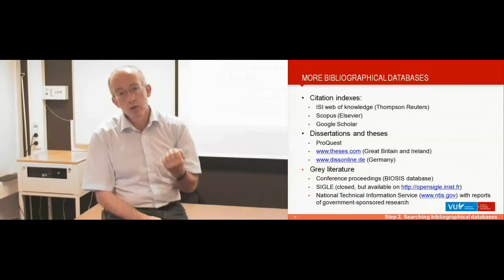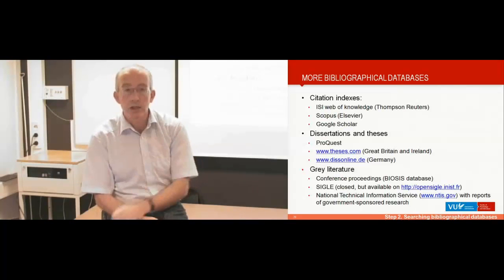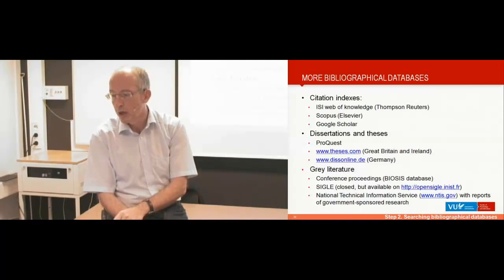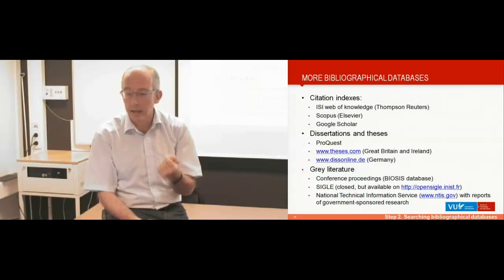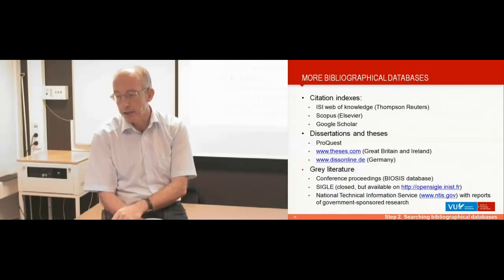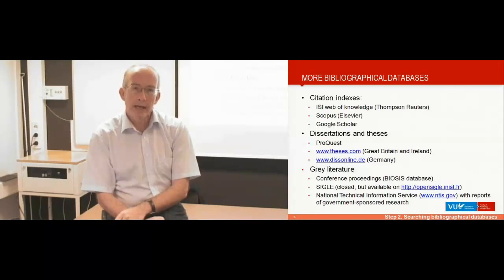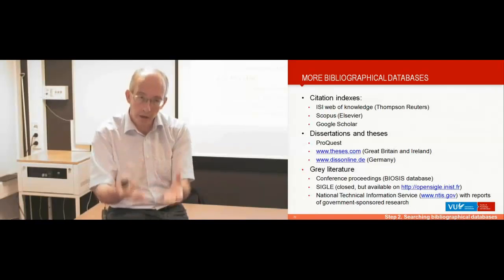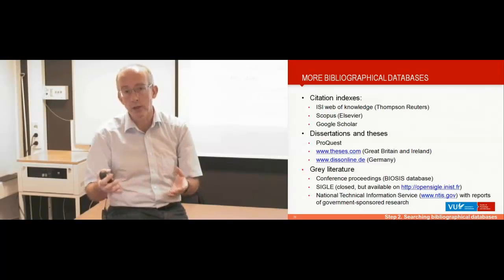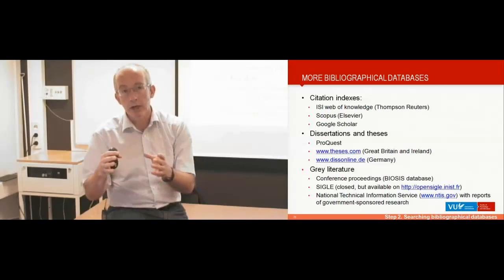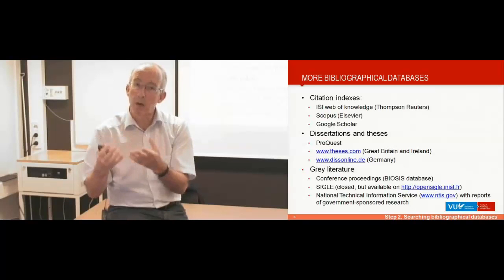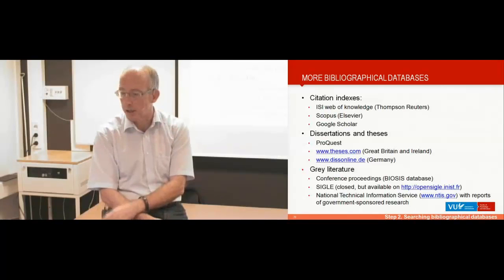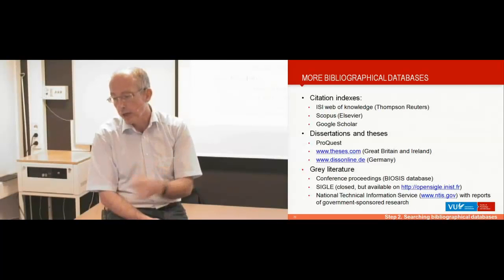It's important to think about whether you want to include dissertations and theses. One problem of meta-analysis is that we often do not know whether there are studies that were done but not published. One way to address that is to search in gray literature — for example, reports from research institutes published as reports but not as papers — which you won't find through PubMed or standard databases. There are specific databases to find gray literature.